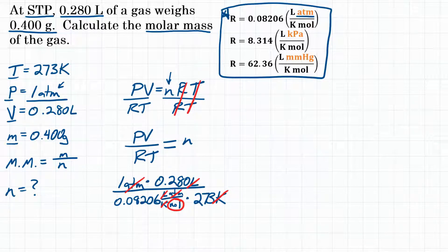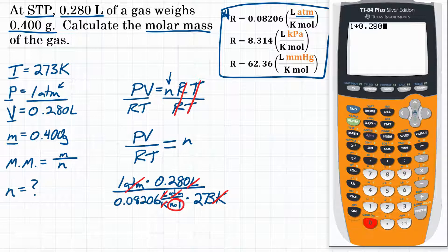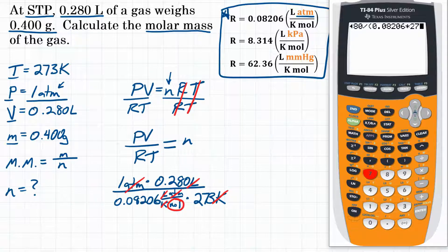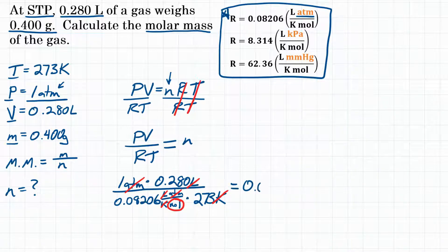Let's get our calculator. Punch in 1, multiply that by 0.280, and then divide by—open parentheses to do the order of operations correctly—0.08206 multiplied by 273. Close parentheses, hit equals. We get 0.012498672. Let's round that to 0.0125. So our answer here is 0.0125 moles.